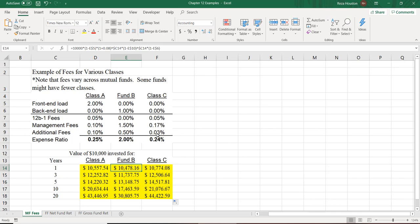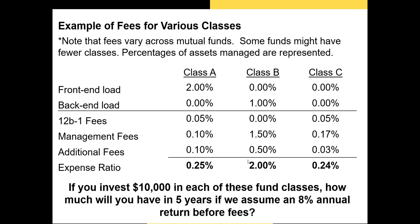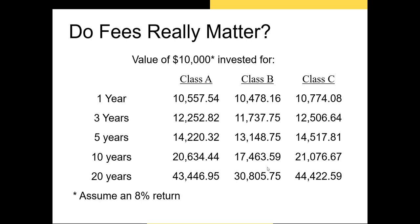We can now see what a difference fees make to the future value of our investment. The Class A and Class C shares have a pretty similar future value, but Class B shares have an expense ratio of 2% — much higher than Class A or Class C — and since you're paying this every year, it dramatically eats into returns. You're looking at an opportunity cost of potentially $14,000 to $15,000 over the investment period. So you always want to identify mutual funds that have the lowest fees possible.